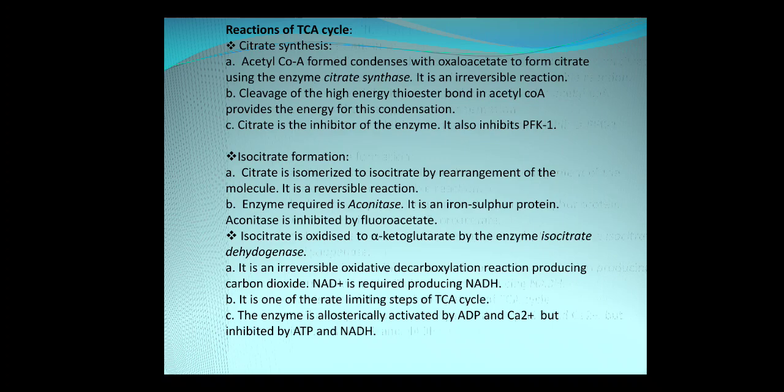Next is the formation of isocitrate from citrate, achieved by the enzyme aconitase, where citrate is isomerized to isocitrate by rearrangement of the molecule. This is a reversible reaction. Note: aconitase is an iron-sulfur protein and it is inhibited by fluoroacetate.